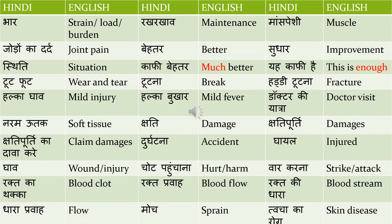Kshati means damage. Kshati purti means damages — 'Kshati purti ka dava karna' means to claim damages. For example: 'Meri saath ek durghatna hui aur main kshati purti ka dava karna chahta hoon.' Durghatna means accident. Ghaayal means injured — 'Main ghaayal ho gaya durghatna mein.' Ghaav means wound or injury. Chot pahunchana means to hurt or harm someone. Vaar karna means to strike or attack.